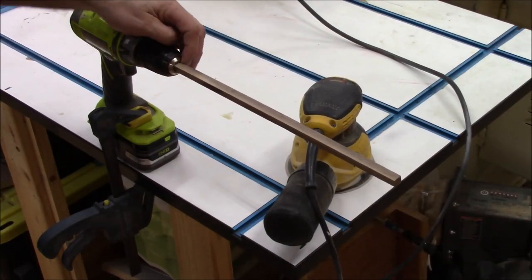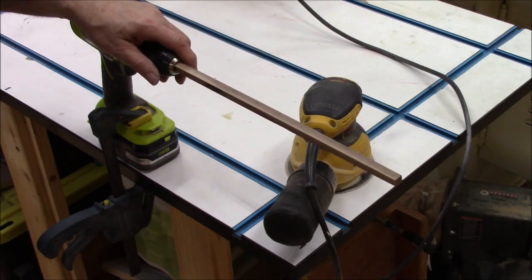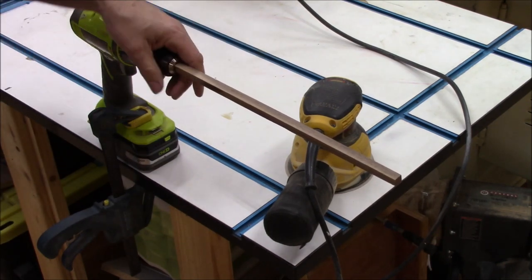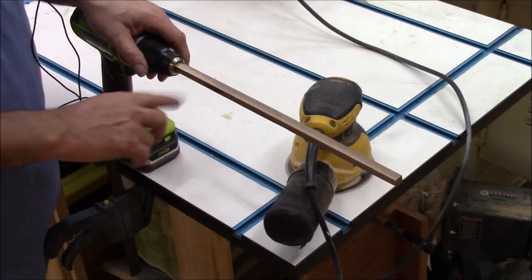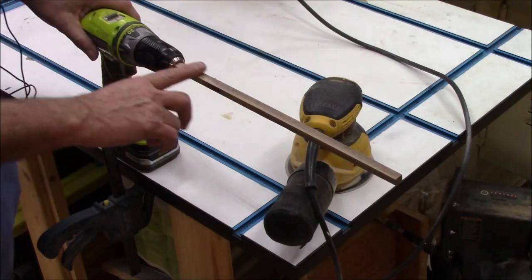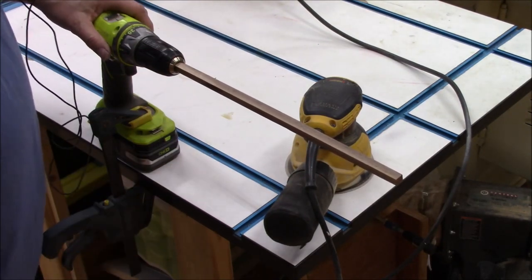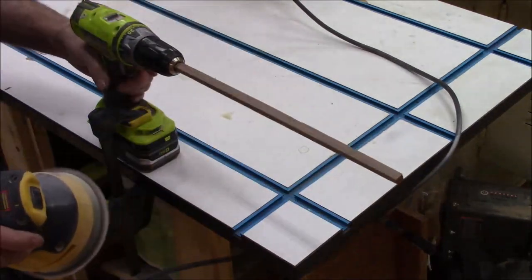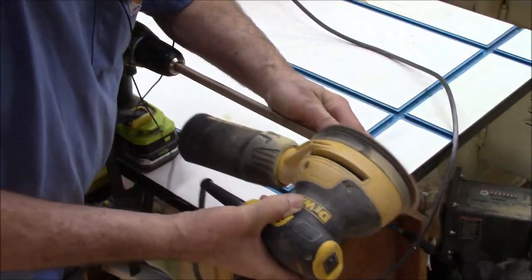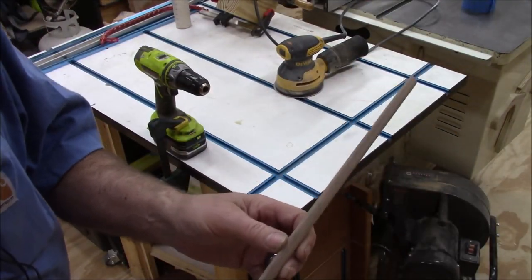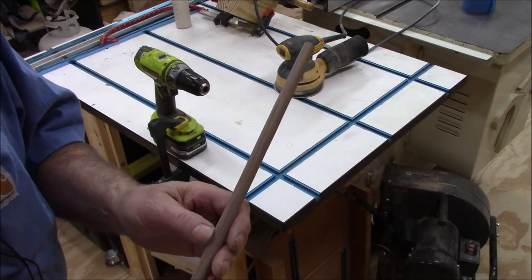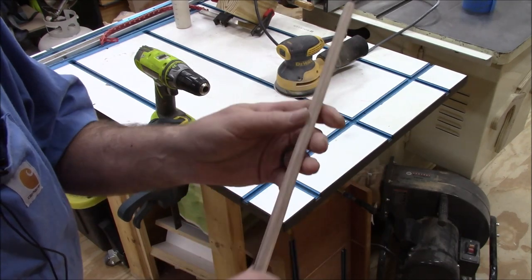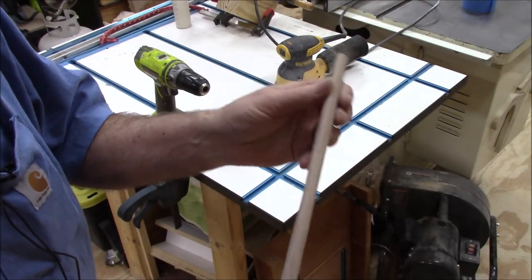I rounded one end off on my spindle sander. I've got it chucked up in a drill and I've got the drill clamped to my workbench here. I'm just going to round this over a little bit. I don't want it perfectly round. It's going to be kind of a random thing, so I'm basically knocking the edge off right now. I've kind of got it close to what I want. Now I'll build this up with some polymer clay and this will be the handle, and we'll taper this down a little bit more on the spindle sander.